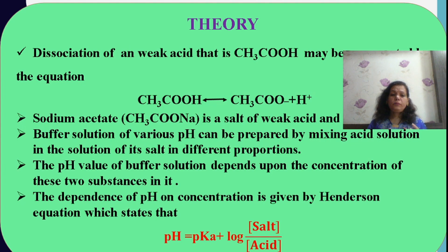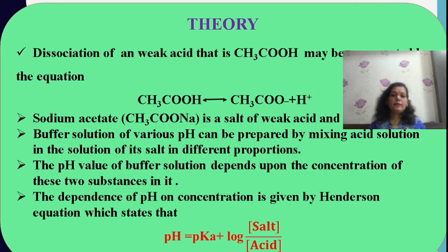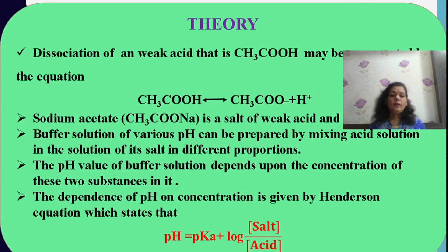The pH of the buffer solution depends upon the concentration of salt and acid present in the mixture. If I combine weak acid and sodium acetate, the pH value will depend upon the concentration of salt and acid. So, if I apply Henderson's equation in this case, I can find out the pH of these solutions: pH = pKa + log([salt]/[acid]). If I plot a graph of pH versus log of salt upon acid, I can easily determine pKa.